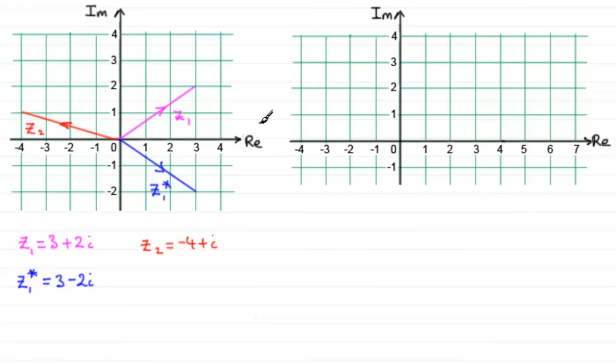Now, if we were to add Z1 and Z2 together, let's just do that. Z1 plus Z2. What do we get? Well, 3 minus 4 is minus 1, and 2i plus i is 3i. And if we were to represent this on the Argand diagram, it would be something like this, going from the origin up to there. So that would be Z1 plus Z2.